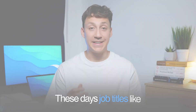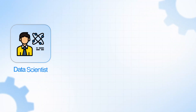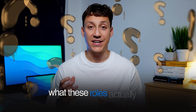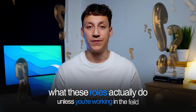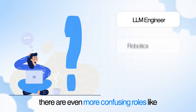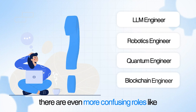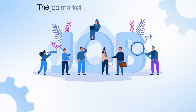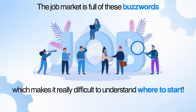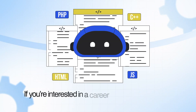These days job titles like data scientist, machine learning engineer, and AI engineer are literally everywhere. If you were anything like me, it's quite hard to understand what these roles actually do unless you're working in the field. And then there are even more confusing roles like LLM, robotics, quantum, blockchain engineer — okay, I'm making that one up, but you get the point. The job market is full of these buzzwords, which makes it really difficult to understand where to start if you're interested in a career in machine learning.